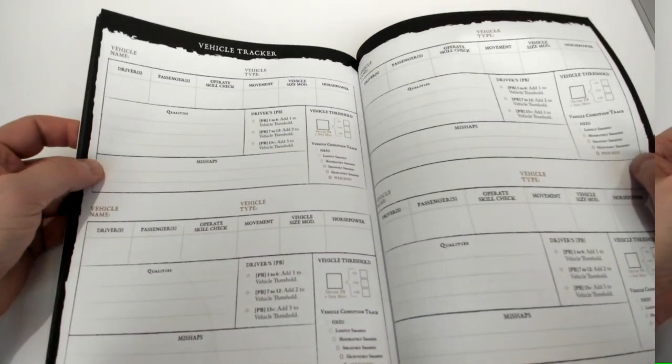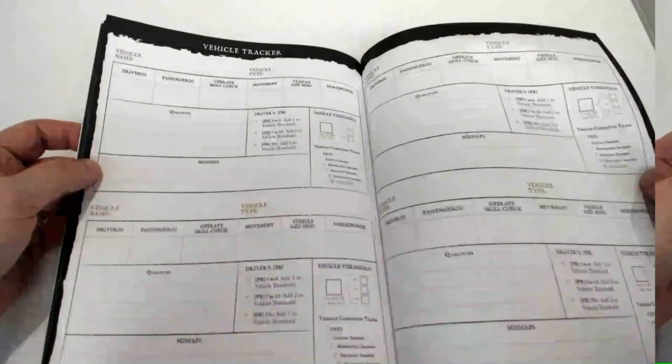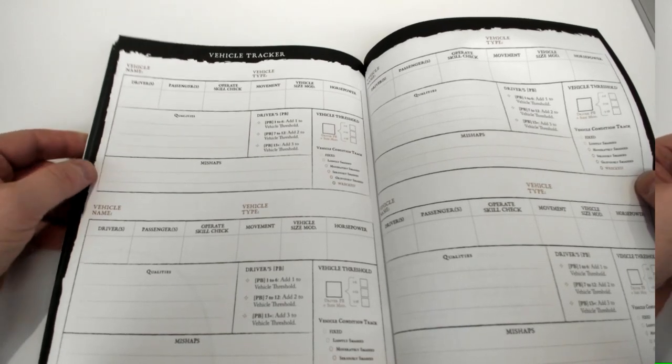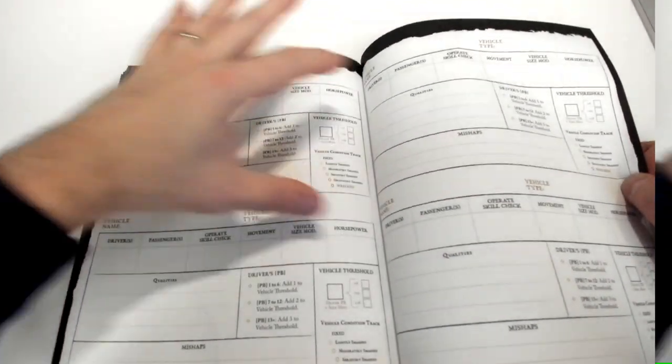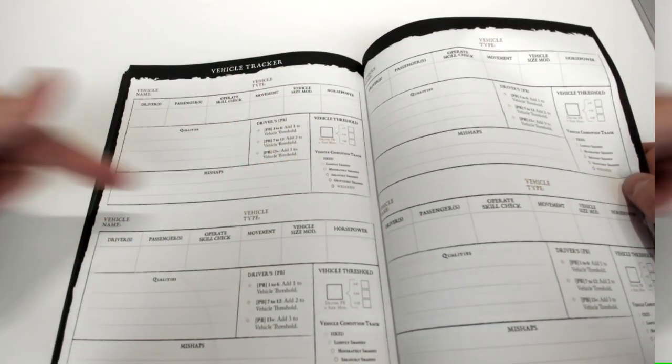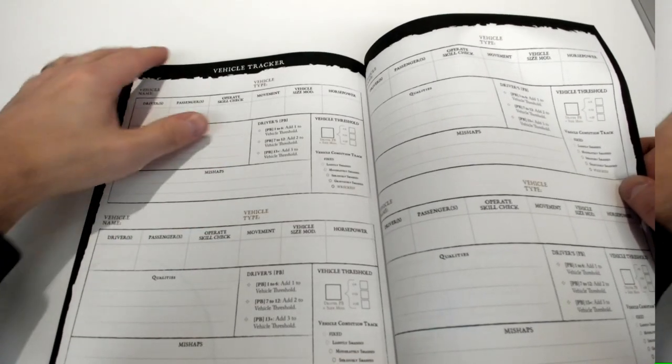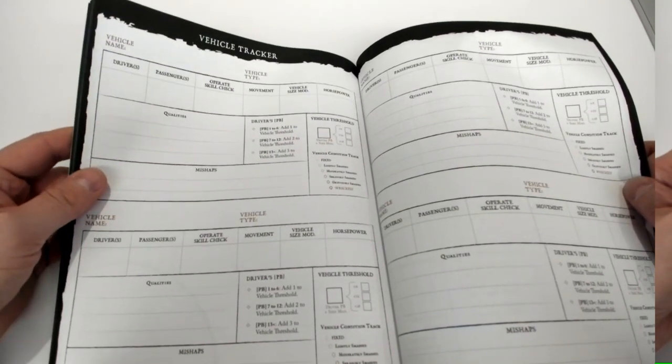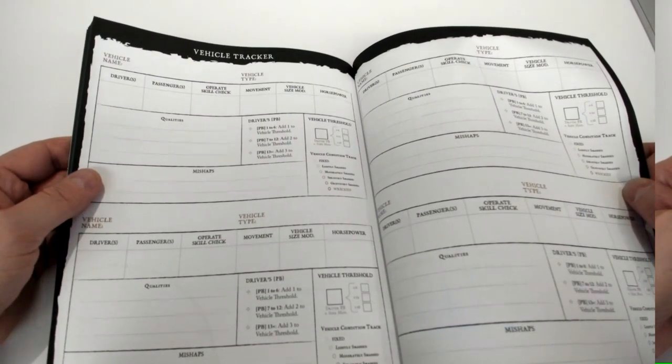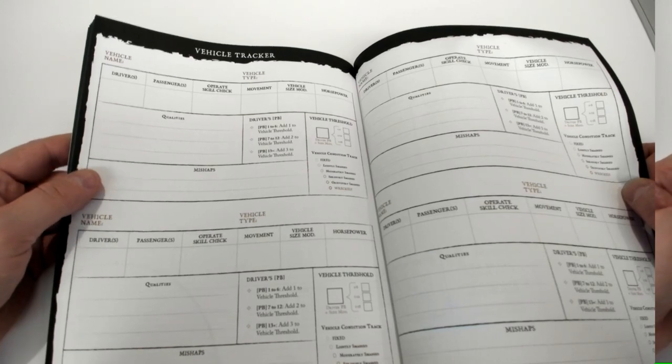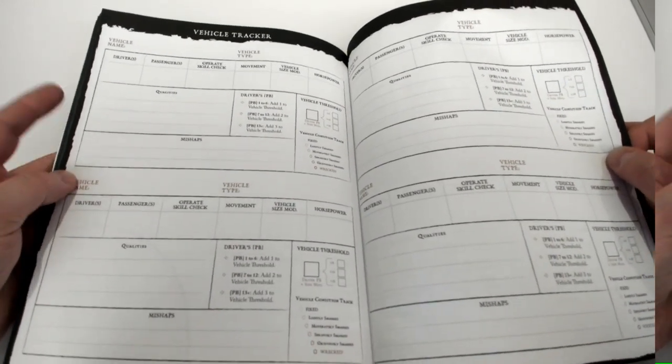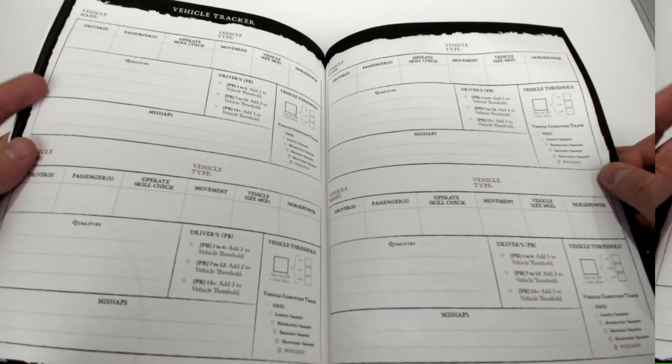We also wanted to create vehicle trackers. This is super cool because what we did recently is actually took this, we tore this page out and cut it in half and gave players the name of their vehicle where they could track their vehicle thresholds and the stuff about their vehicles. Because vehicles are kind of like characters - it's like an extension of the character - and we want players to track their own vehicles.